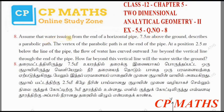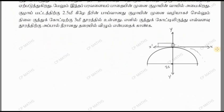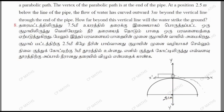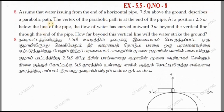Assume that water is issuing from the end of a horizontal pipe. The horizontal pipe is 7.5 meters above the ground. This pipe is 5.5 meters below the center vertex. Here we note the height of the center of the pipe. The vertex of the parabolic path is the end of the pipe.